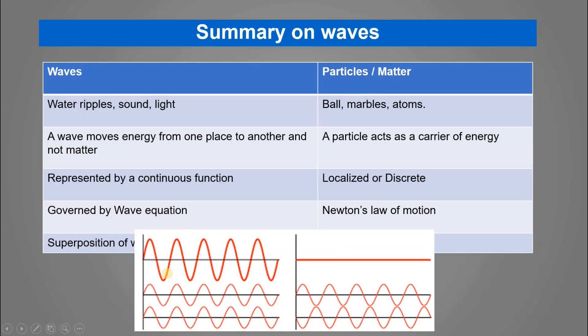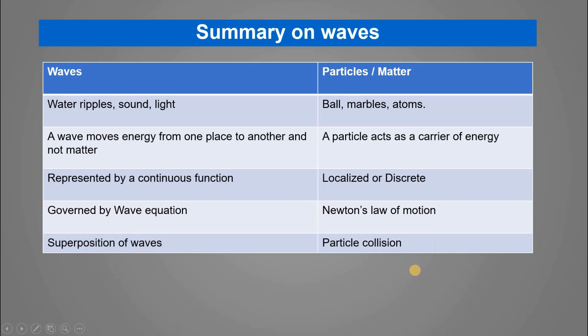When two waves occupy a given space, they can add constructively — combining their amplitudes — or cancel each other out destructively. When particles interact, the collision can be either elastic or inelastic. This is the main distinction between classical wave and particle behavior.